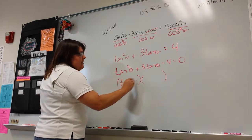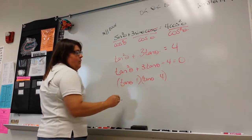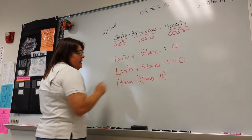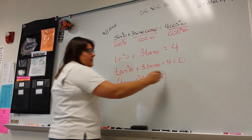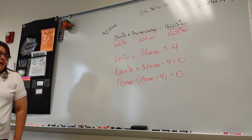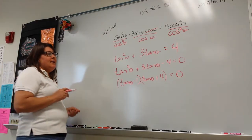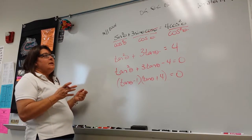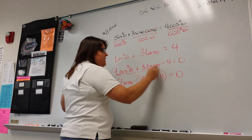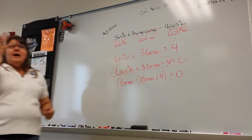We have tan theta times tan theta, the numbers four and one, positive/negative equals zero. That's part one — done. We're going to set both parts equal to zero and solve.